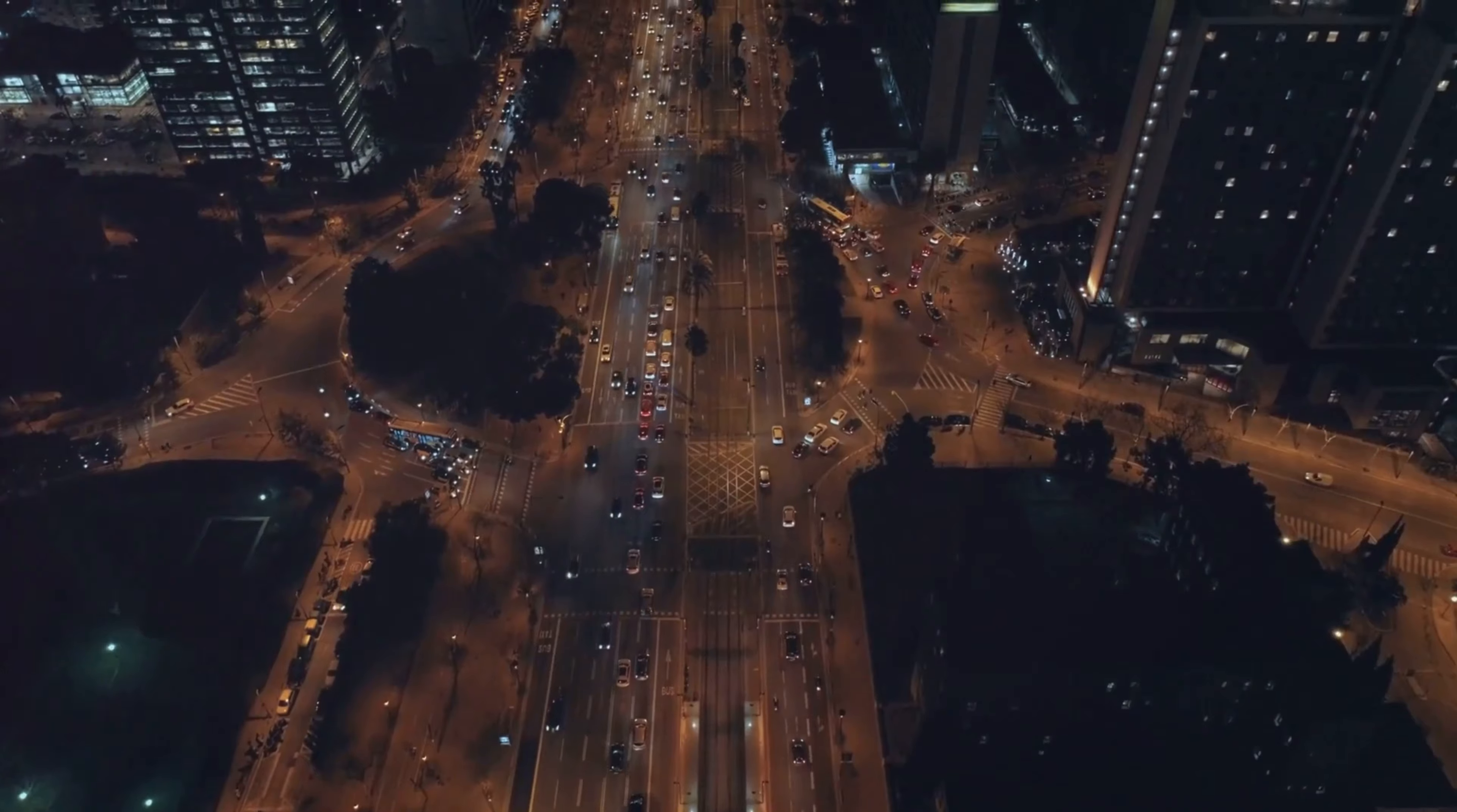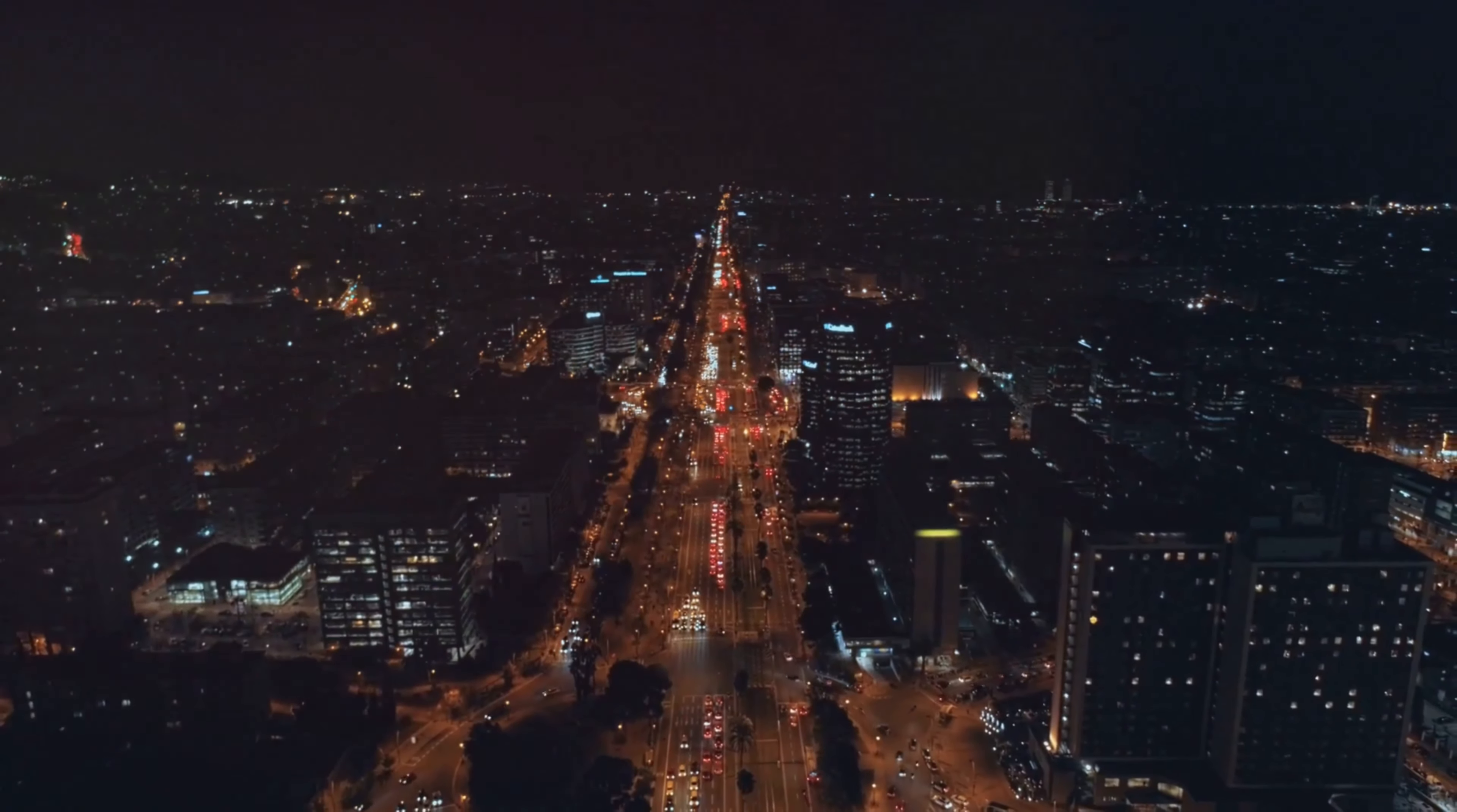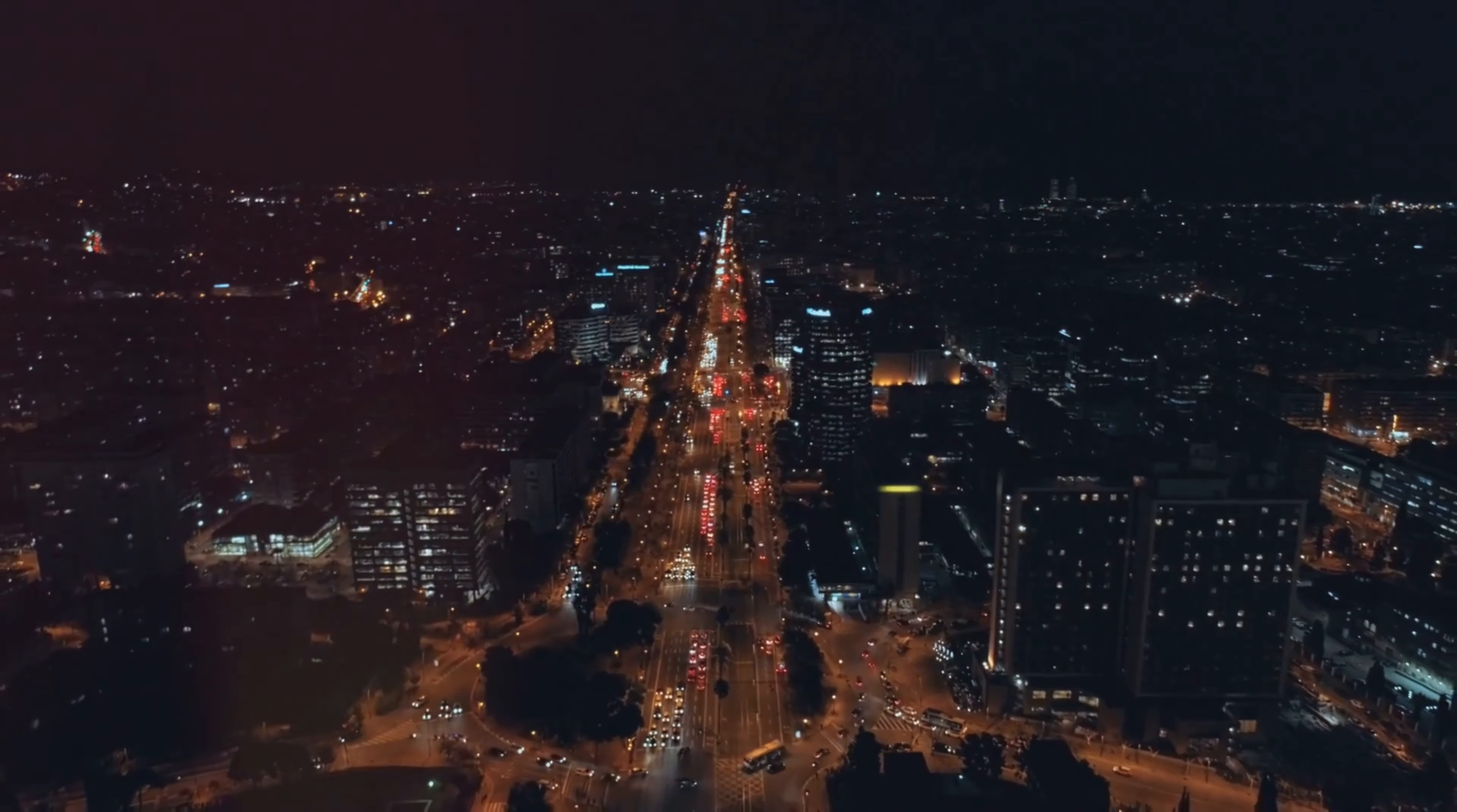Imagine a bustling city with roads connecting different districts. These roads are like the layers in DNNs, connecting different nodes or neurons that process information. The more layers or roads, the deeper the network, and the more complex the data it can handle.